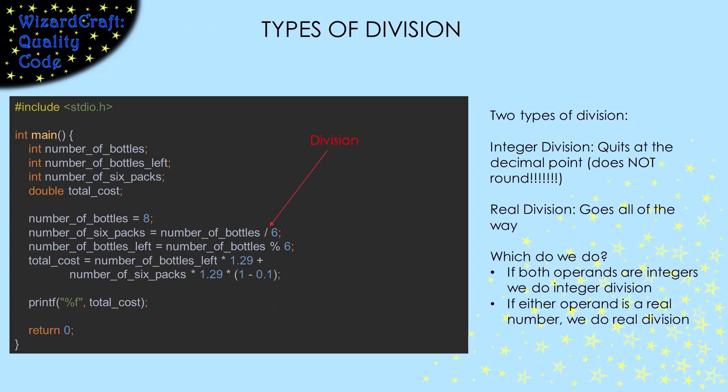The slash in this expression means division. In C, there are two kinds of division. Integer division, which quits when it gets to the decimal point and evaluates to an integer. Or real division, which goes as far as the precision of the system allows. Both are coded with a slash. So the question is, how do we know which one the compiler will give us?